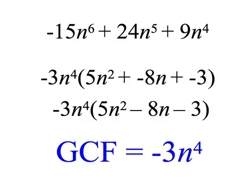It's often common to write the first term as positive, but certainly not required. It would be more common in this example to change our final answer to negative 3n to the fourth times the quantity 5n squared take away 8n take away 3.